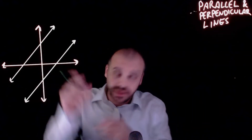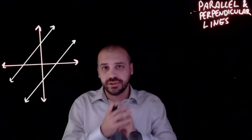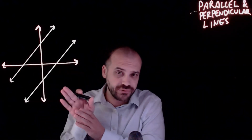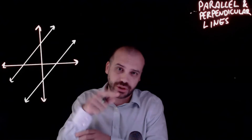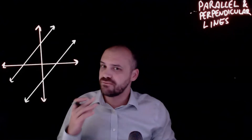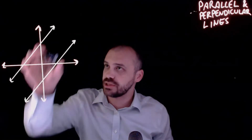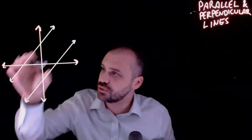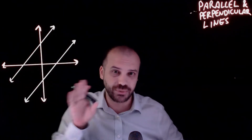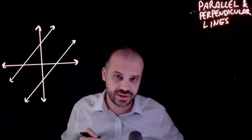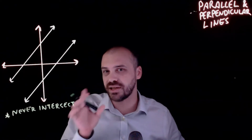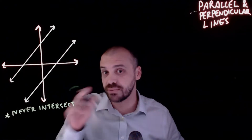We're talking about parallel and perpendicular lines. We're going to talk about parallel lines for a while and then jump into perpendicular lines. Parallel lines - a very simple idea. I've got two lines here that are parallel. That means they will never intersect, and it also means that they have the same gradient.